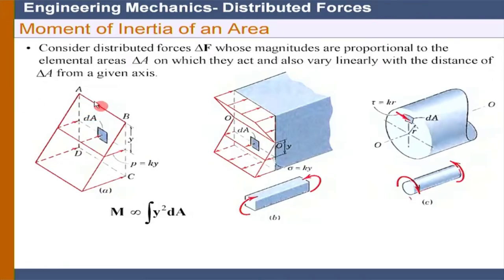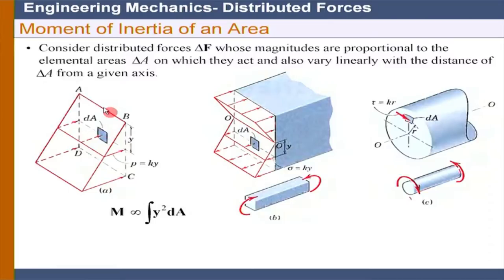In a hydrostatic problem — say ABCD is a dam or valve — we calculated pressure as rho g y. Therefore the force equals rho g y multiplied by dA. You can clearly see that the force on this elemental area is varying with the depth, so force is a function of y distance from the axis AB. Therefore, if we take the moment of this force, what we get is the integral of y squared dA — the moment about axis AB is y squared dA.